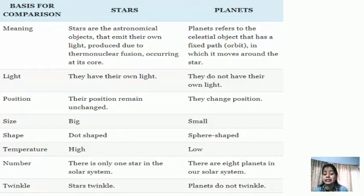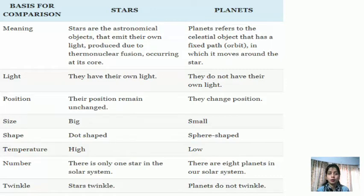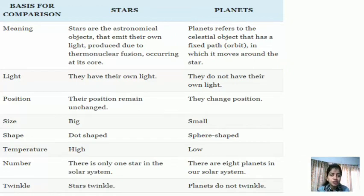The temperature of stars is very high — up to 28,000°C — while planet temperatures are much lower. There is only one star in the solar system, which is the Sun, and there are eight planets. Stars twinkle due to refraction — which will be explained in upcoming videos — while planets do not twinkle. Stars are composed of hydrogen and helium, whereas planets can be solid, liquid, gaseous or a combination.